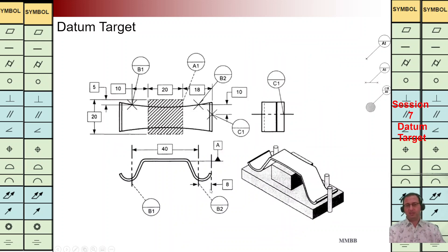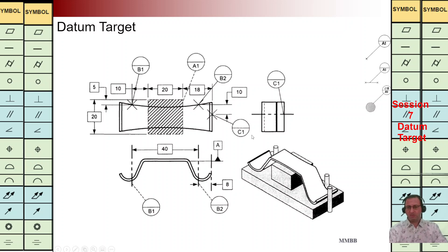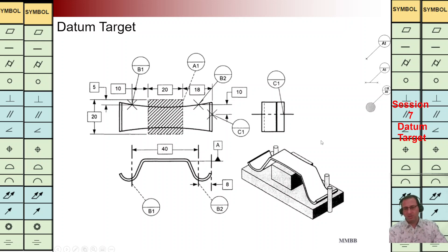For the last example today regarding datum target, we have datum plane A. A1 shows a datum target area — the hatch phantom area — and we have the size of that area in the box. We have B1 and B2, and in another view we can see B1 and B2, which represent datum target lines. We have these two pins — B1 and B2. We also have C1 shown by a cross in one view, and in another view we can see this line, and in this situation we need this pin for C1.